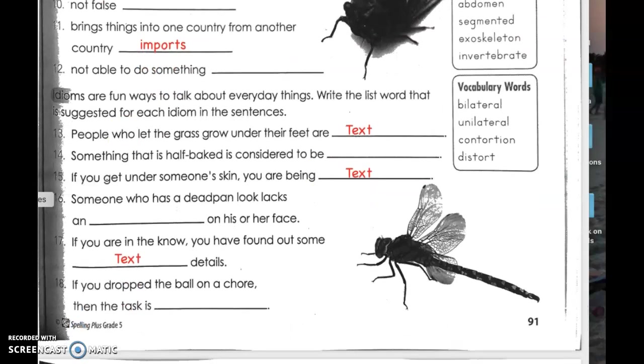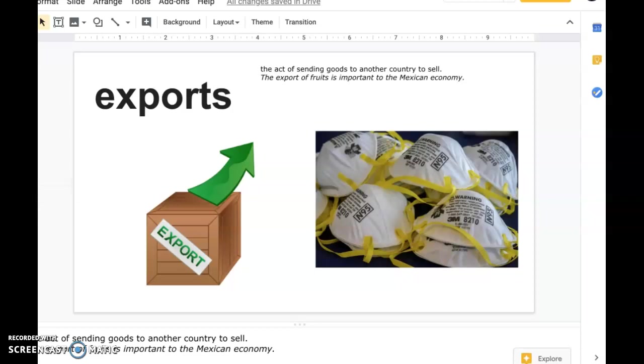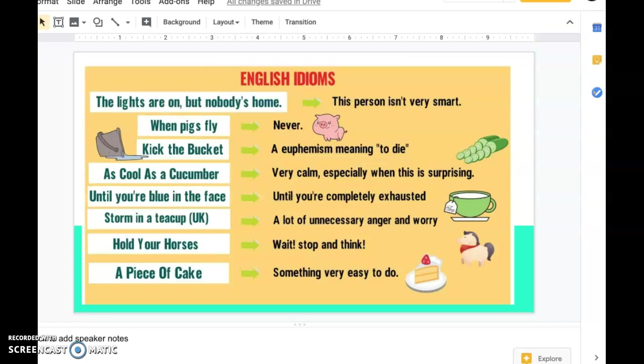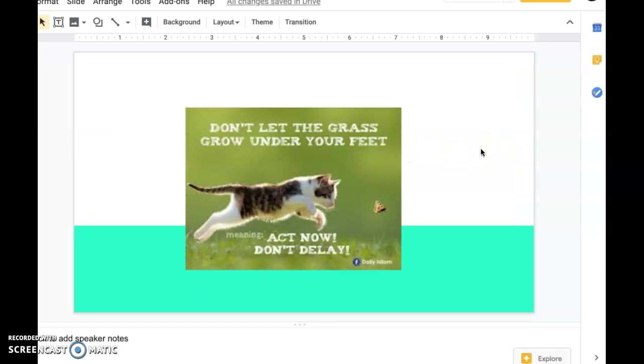Next, we're going to be talking about our idioms. So remember, idioms are fun ways to talk about everyday things. Write the list word that is suggested for each idiom in the sentences. So idioms are just something that you have to memorize. They're just fun ways to say something that is not literal. So it's figurative language. For example, if I say I'm feeling as cool as a cucumber, that means that I feel very calm and peaceful. And if I say, hold your horses, stop running in the hallway, it means to stop and think. And if you say this homework is a piece of cake, that means it's something that's very easy to do. You're not saying that you want to eat the homework. It's just a saying and an English idiom.